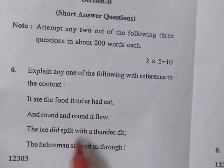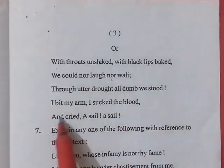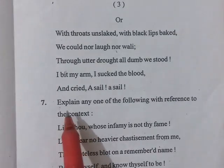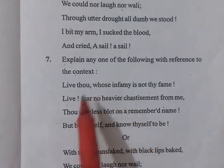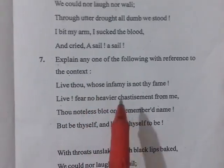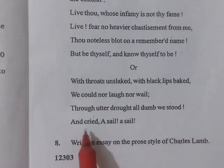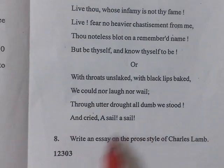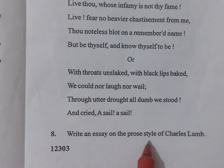For example, question six is: explain any one of the following with reference to the context, and here you have been given a few lines from your prescribed text. In question six you have been given an option — either this or that one. Question seven is also based on explanation and again you are being given an option. So in total you have been given four explanations and out of four you have to explain only two. Questions six and seven will be based on explanations.